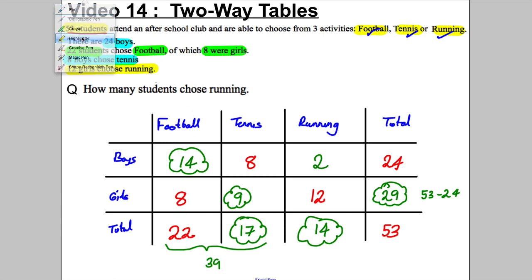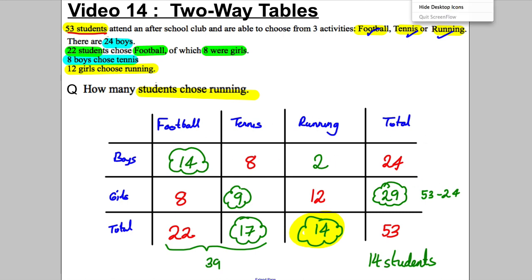The question was how many students chose running. If you look in the running column you get 14 students. So that's always how we do this: make a revision card, put the options across the top with a total, put the gender in this case down the side with a total, fill in everything you know and use that information to fill in the missing gaps by picking a row or column that is full up apart from one missing number.